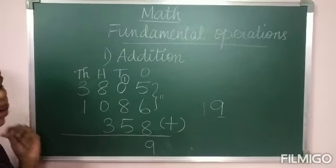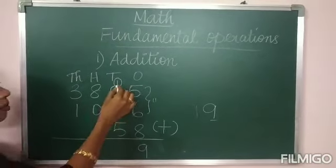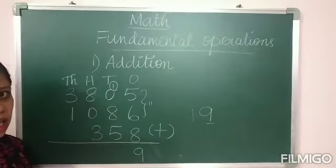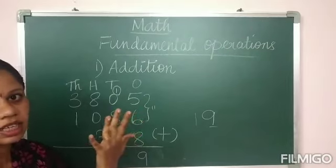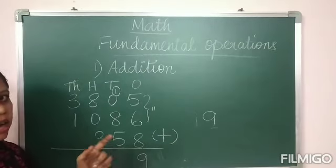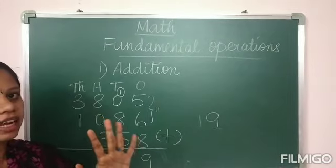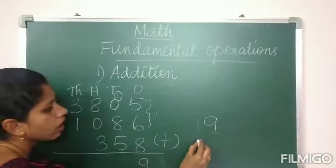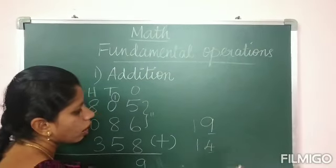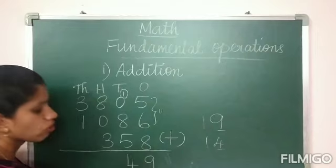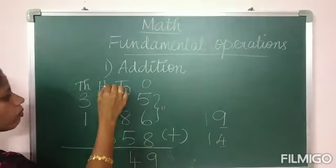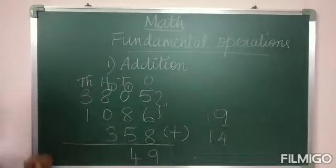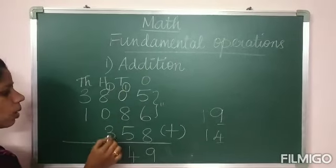Now you have to add these four digits in the tens place. 1 plus 0 is 1, 1 plus 8 is 9. Keep 9 in mind and count 5 on fingers: 10, 11, 12, 13, 14. Write 4 here and regroup 1 to the hundreds place. Now add 1, 8, 0 and 3.